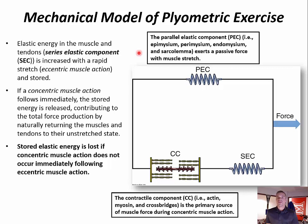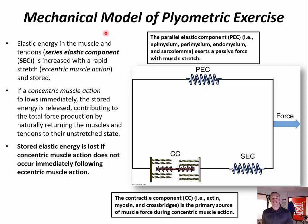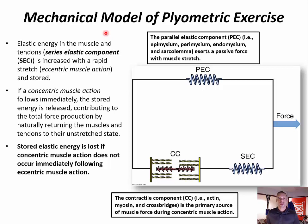Of the mechanical model's many elements, it is the series elastic component that is the workhorse of plyometric exercise. While the SEC includes some muscular components, it is the tendons that constitute the majority of the SEC. When the musculotendinous unit is stretched during an eccentric or lengthening muscle action, the SEC acts as a spring — elastic energy is stored. If a concentric or shortening action immediately follows, the stored energy is released, allowing the SEC to contribute to total force production by returning muscles and tendons to their unstretched configuration.